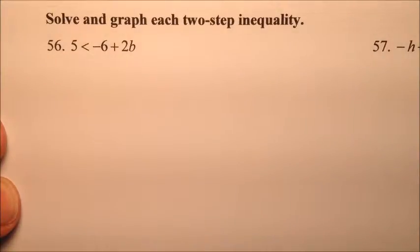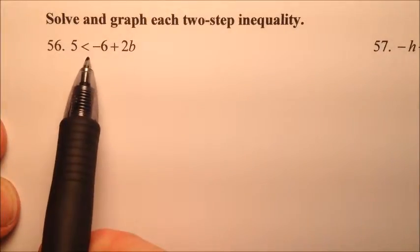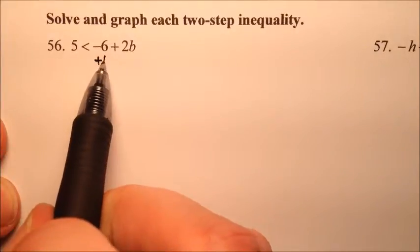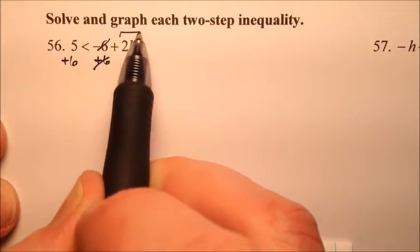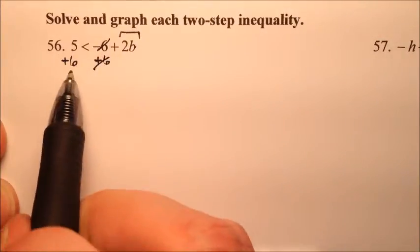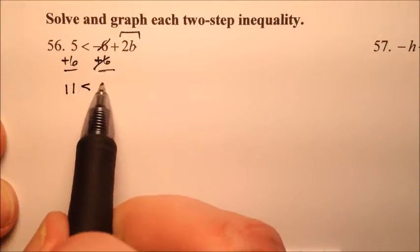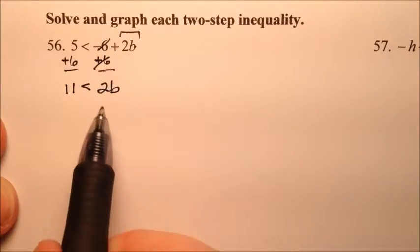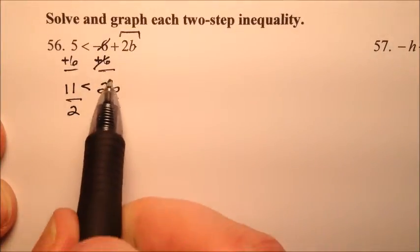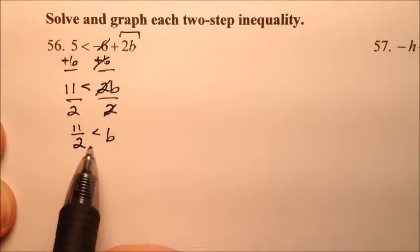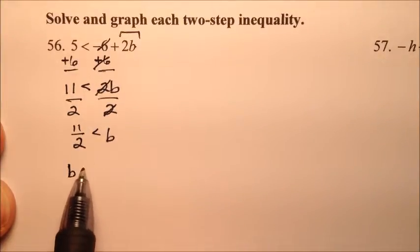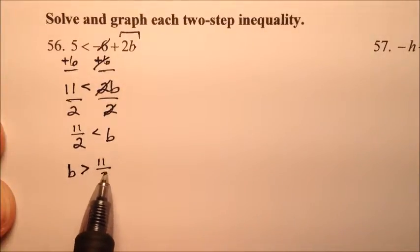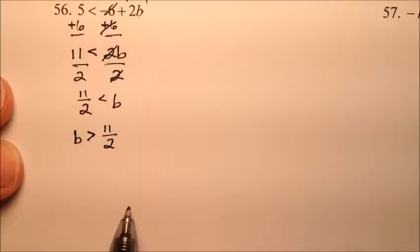In the last five problems, 56 through 60, we're solving and graphing two-step inequalities. Number 56 is 5 is less than negative 6 plus 2b. Add 6 to both sides to isolate the term with b, giving 11 is less than 2b. Divide both sides by 2, giving 11 halves is less than b. Switching the sides requires changing the inequality symbol, so b is greater than 11 halves.